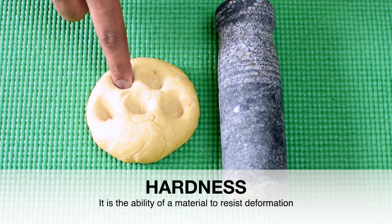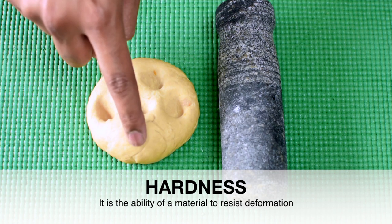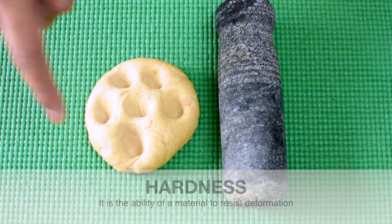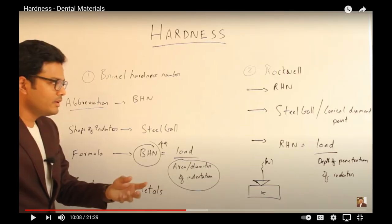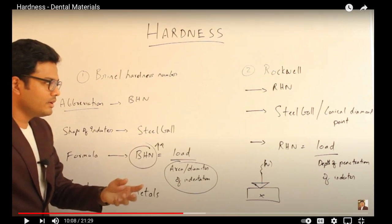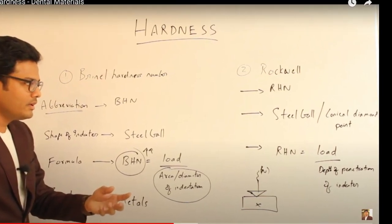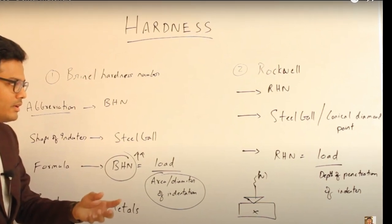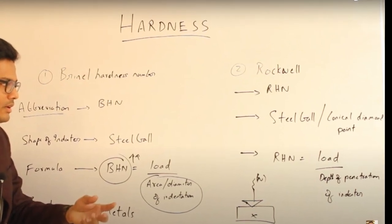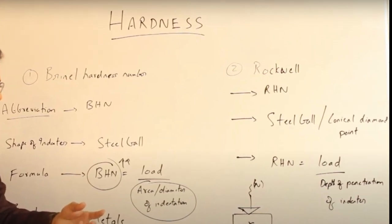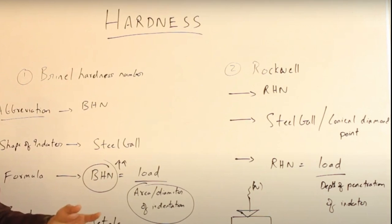Hardness is determined by standard tests where surface resistance to indentation is measured. The Brinell hardness and Rockwell hardness are the two most referenced hardness test methods available. We assign an arbitrary number, and the higher the number, the harder the material.